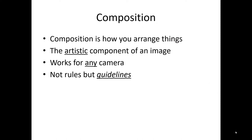Composition is how you arrange things. If you're making a book report or writing a story, the things you are arranging are the words. If you're doing a musical composition, the things you arrange are the notes — which notes to use, how long they should be played, and in which order. In a photograph, the composition is how you arrange things: where you're going to stand, where the primary subject is going to be. It represents the artistic component of an image.